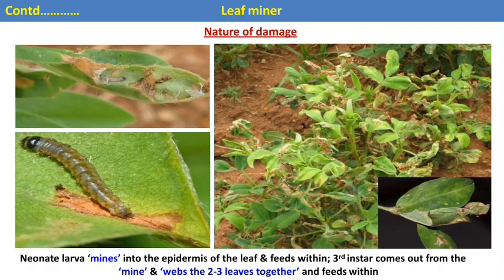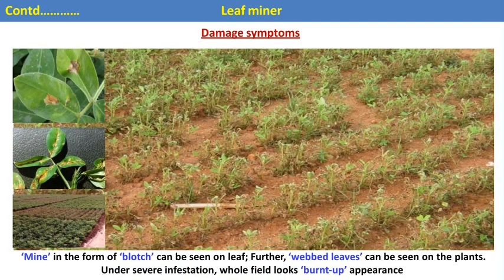As a result of feeding, in case of severe infestation, the early instar (neonate) larvae mine into the epidermis of the leaves and feed within. Third instar larvae come out from the mines, web two to three leaves together, and feed within. The early instar larvae feed in the leaf fold; from third instar onward, larvae emerge from mines, weave webs, and feed on two to three leaves together. In severe infestation, the whole field has a burnt-out appearance.